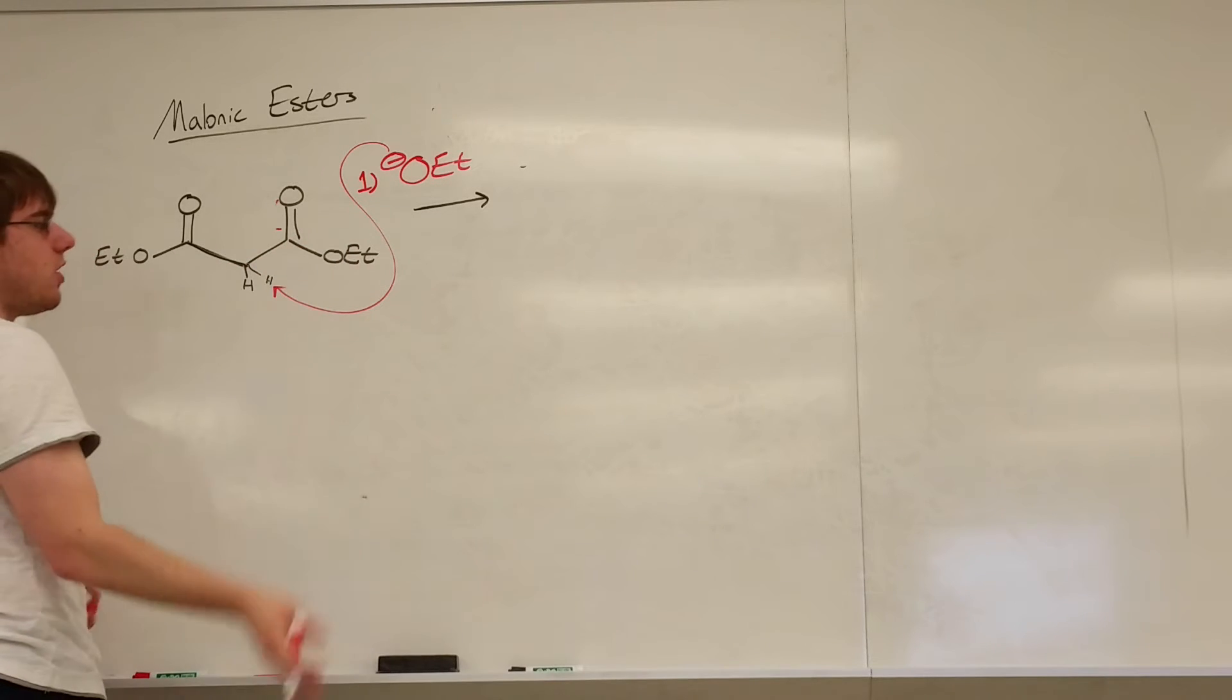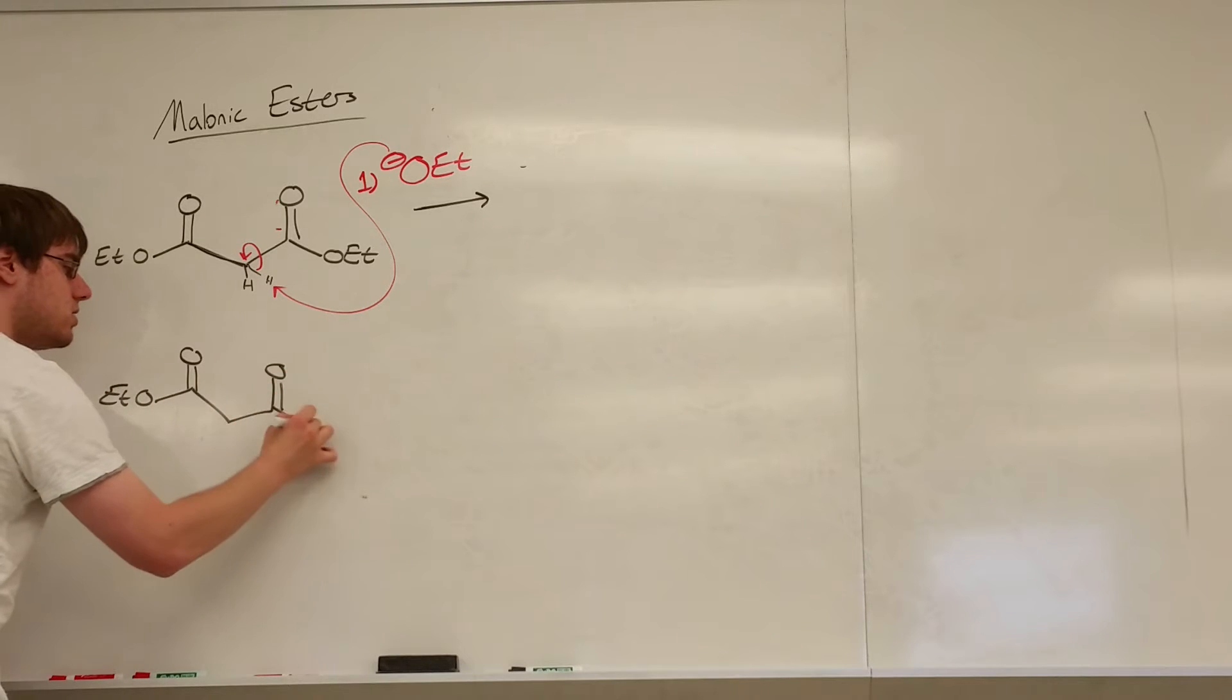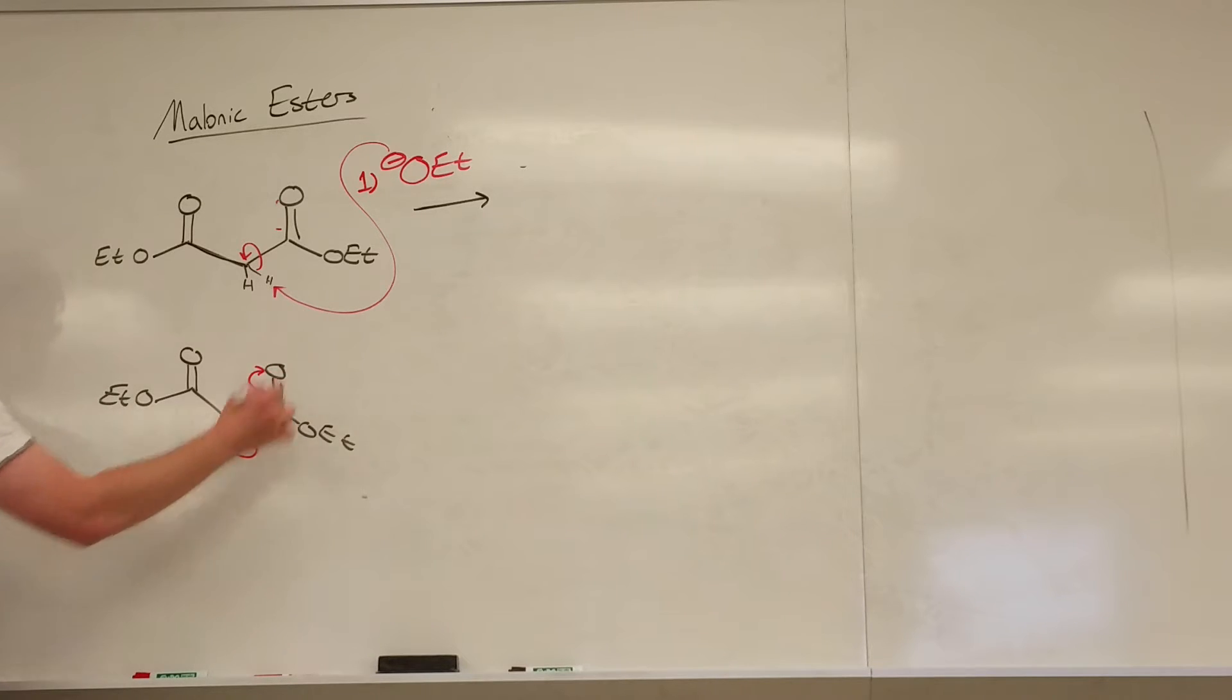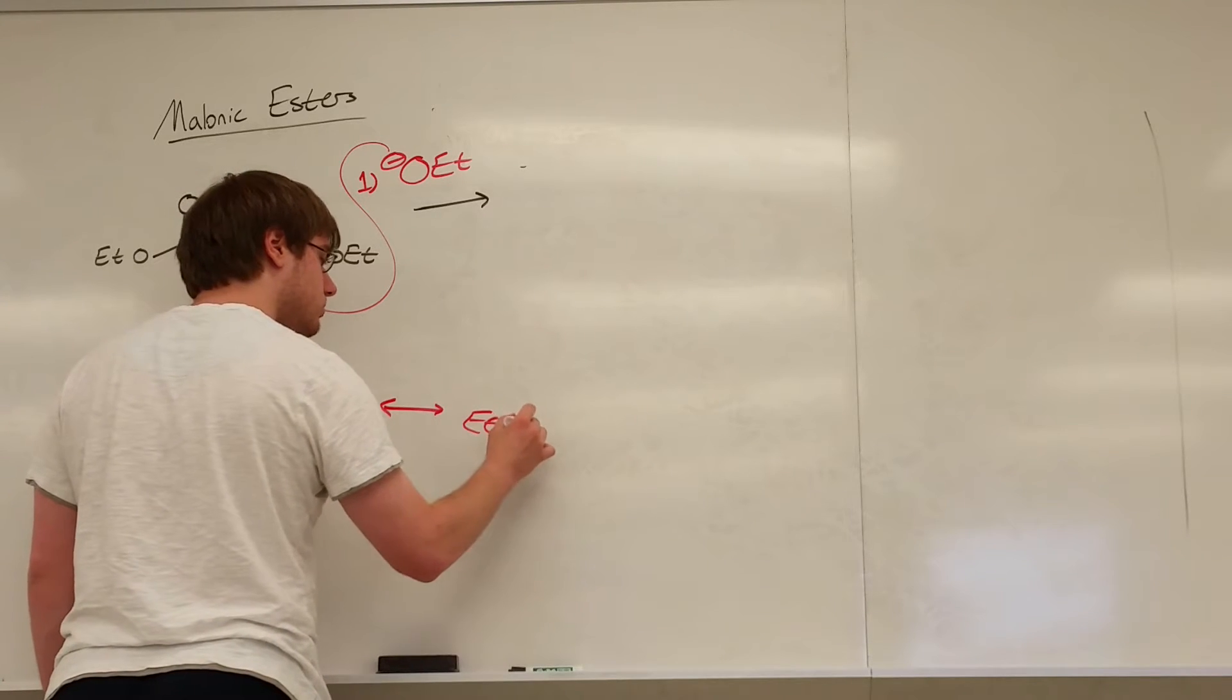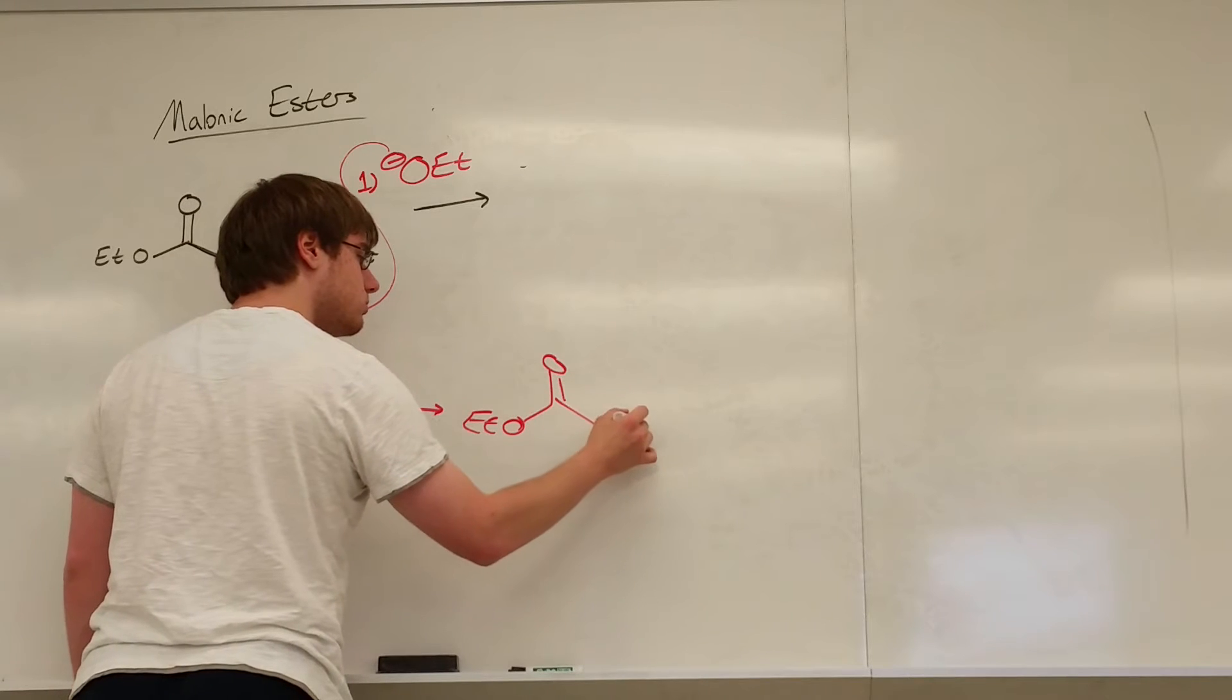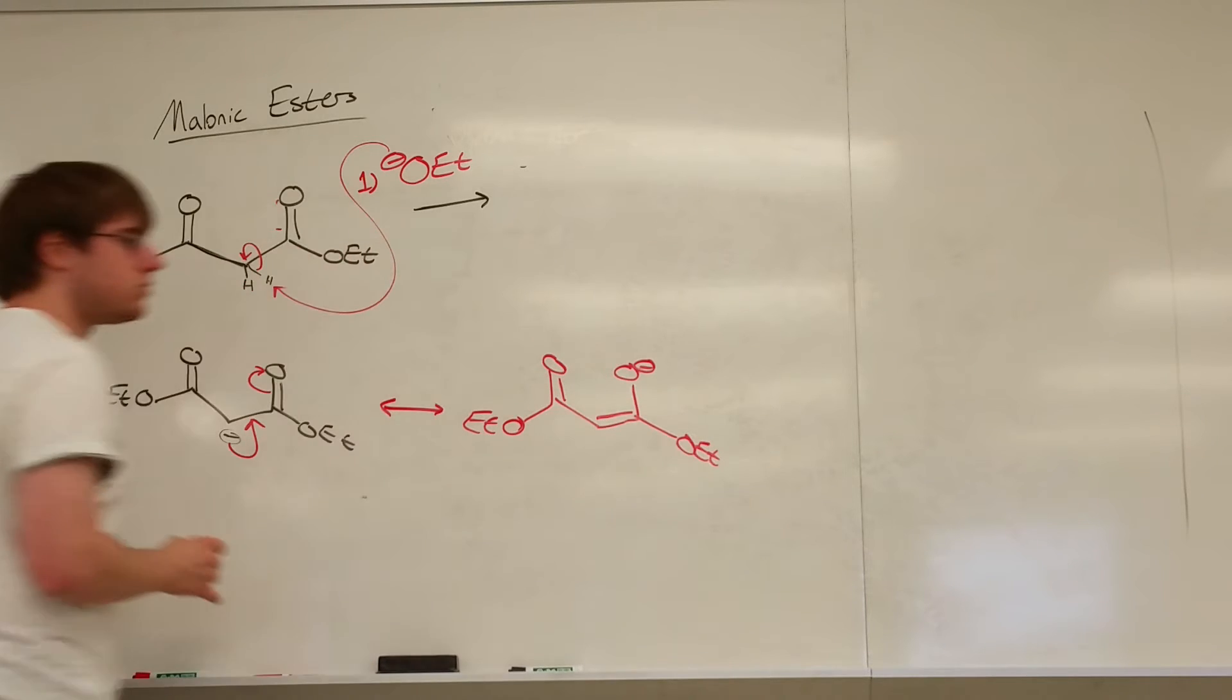And then there are two ways of drawing this next step. You can either just draw from the carbon-hydrogen bond to the carbon that hydrogen is attached to, and that will give you this. That carbon where the hydrogen was attached will be negative. OET, OET, and you have a minus charge on this carbon. Now remember why this minus charge wants to form. Because it can resonate down with that carbonyl. So I'd have a resonance structure that looks like this, OET, and enolate. And of course this could resonate to the left as well.